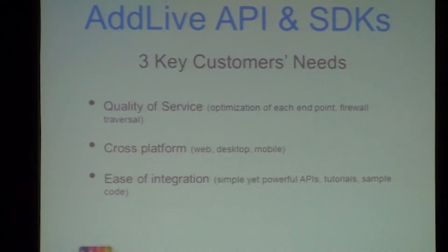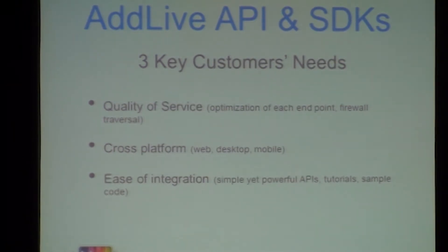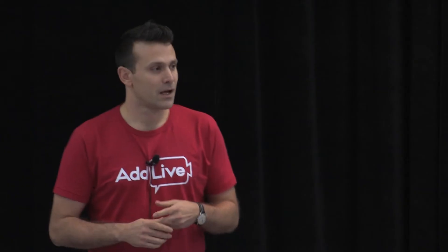Our product is APIs and SDKs. We don't sell directly to the public — we deal with developers. The three key customer needs that we meet through our APIs: the first is quality of service. We constantly monitor certain metrics and optimize the video feed for each endpoint. We also offer firewall traversal and are cross-platform — on the web, including WebRTC and non-WebRTC browsers, desktop and mobile. We've got an iOS and Android SDK too. And the third thing developers wanted was ease of integration.